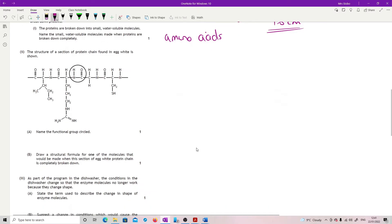Structure of a section of protein chain found in egg white is shown. Name the functional group. So this is your link. It's in a protein. I'm expecting that you went peptide bond, but perfectly fine to have said that it's an amide link or even amide.